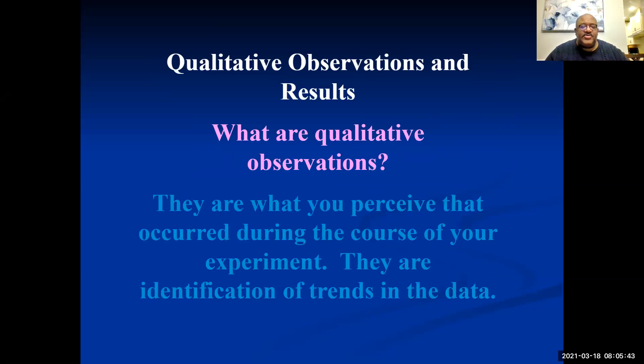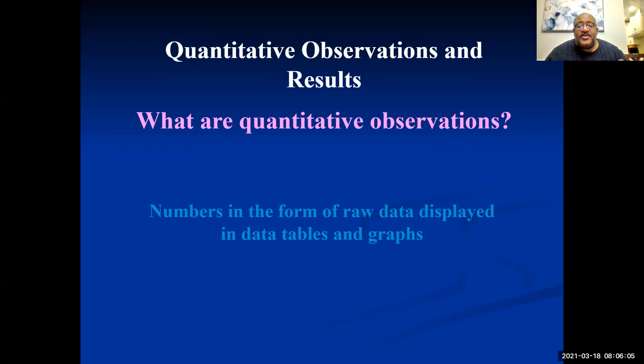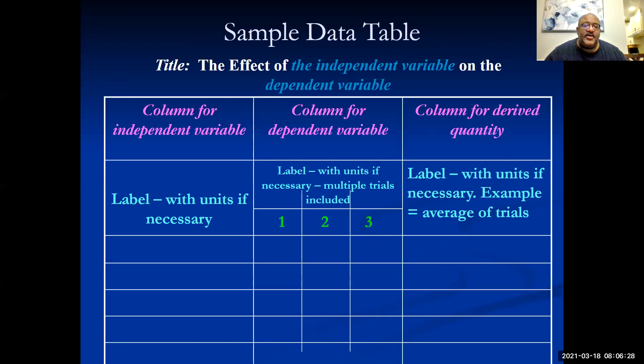Qualitative observations and results. There's qualitative and quantitative. Qualitative, these are what you perceive that occurred during the course of the experiment. This is your opinion, your observation. Quantitative is what I call the nitty-gritty. It's the no nonsense, just the data, the hard numbers in the form of raw data displayed in data tables. In terms of experimentation, quantitative is where you make the money. That's where you can prove or disprove what's going on and it normally takes place in a data table like this one.